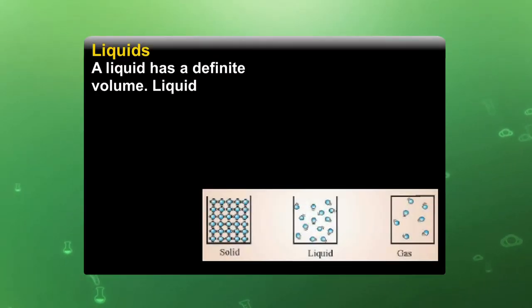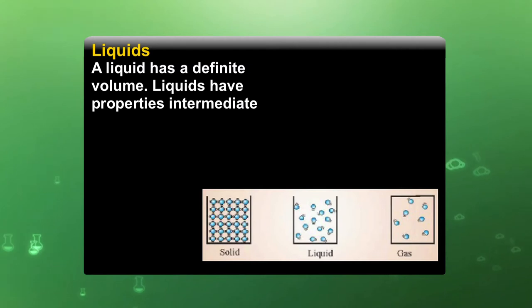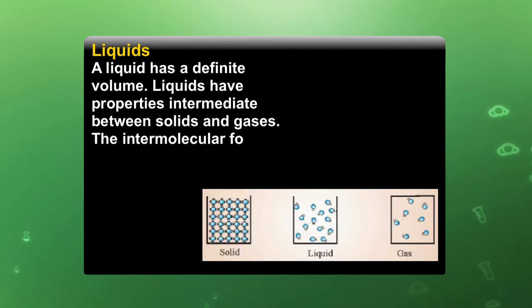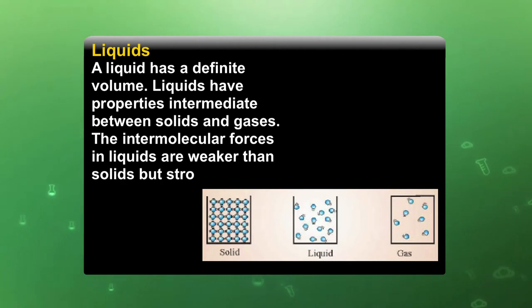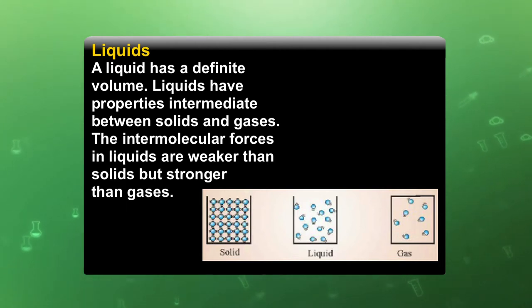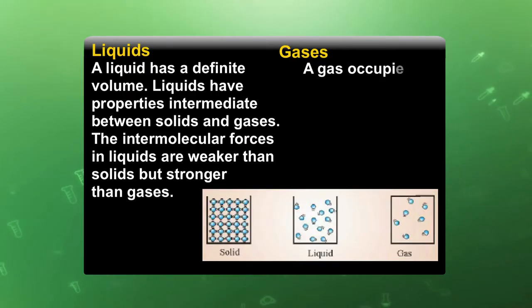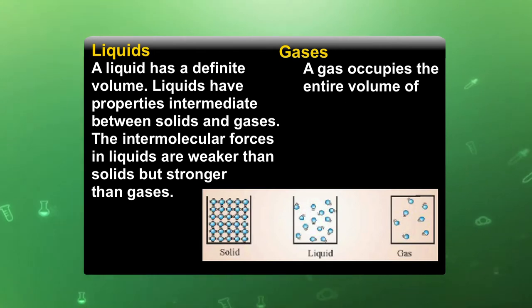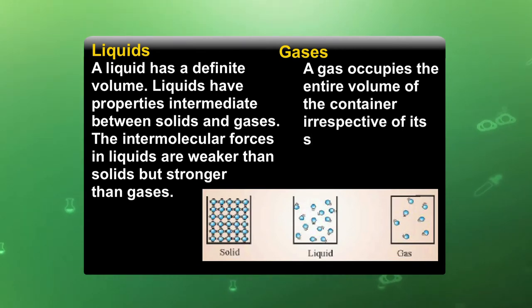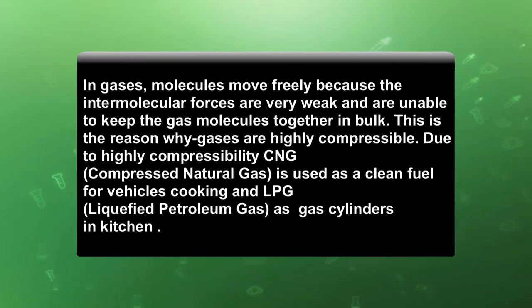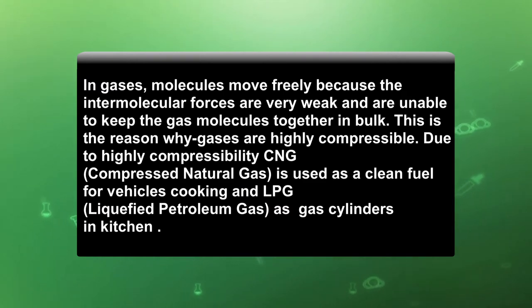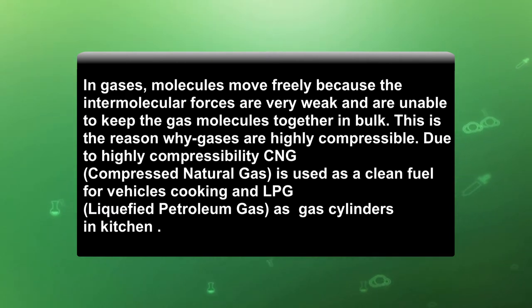A liquid has a definite volume. Liquids have properties intermediate between solids and gases. The intermolecular forces in liquids are weaker than in solids but stronger than in gases. In case of gases, a gas occupies the entire volume of the container irrespective of the container's shape or size. In gases, molecules move freely because the intermolecular forces are very weak and unable to keep the gas molecules together in bulk.